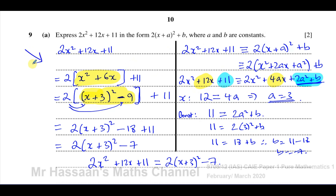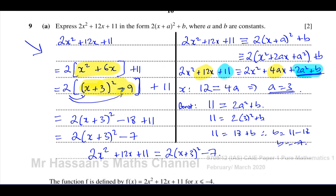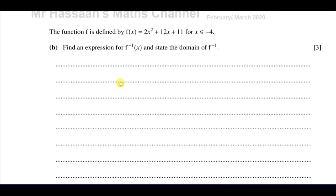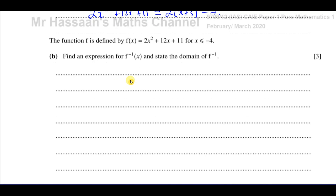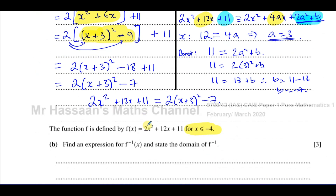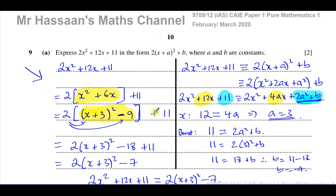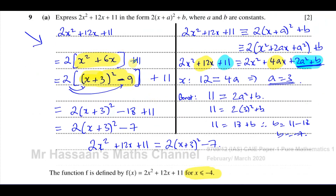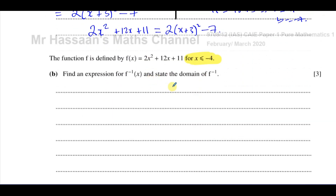That's part A done. Now part B: the function f is defined by f(x) equals 2x squared plus 12x plus 11 for x less than or equal to negative 4. This domain restriction is very important — it's not just decoration. They ask us to find an expression for the inverse of f(x) and state its domain.